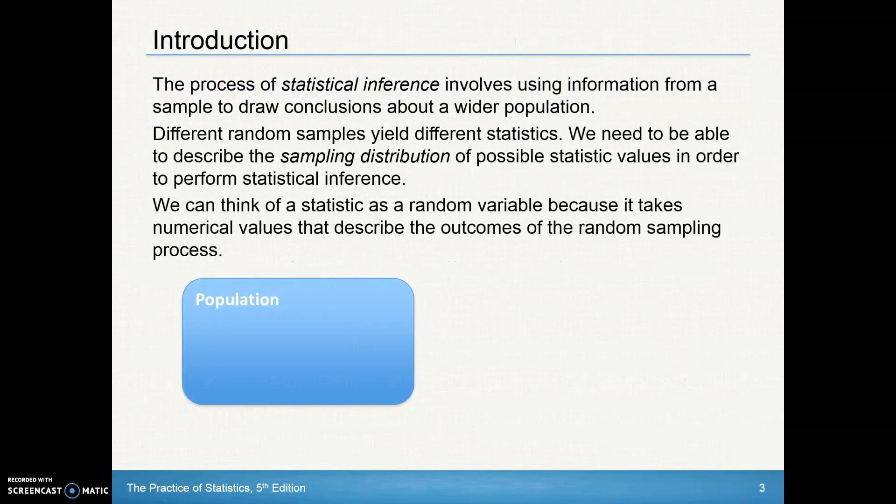For day one, we're going to look at the process of statistical inference, and that involves using information from a sample to draw conclusions about a wider population. Many of you can go out and collect data, collect information from a population, and your sample is more than likely different than somebody else's sample. So in other words, your mean would be different than somebody else's mean. And what we're going to look at is that those different random samples, they yield different statistics.